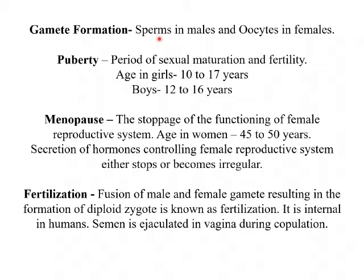Sperms are the male gametes, produced in the testes through the seminiferous tubules, which have germinal epithelial cells that undergo meiosis. Sperm production begins at maturation, referred to as puberty, and continues till death. The age of puberty in boys is about 12 to 16 years, during which sexual maturation and fertility are achieved.